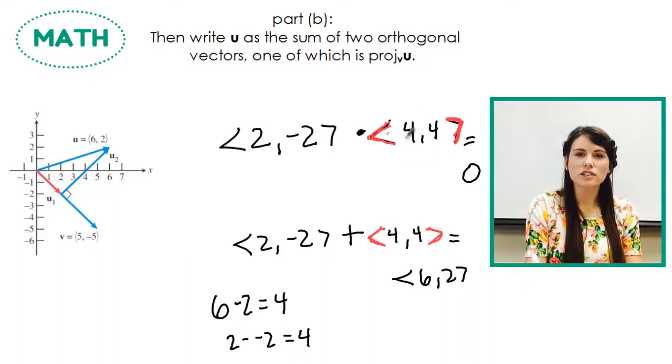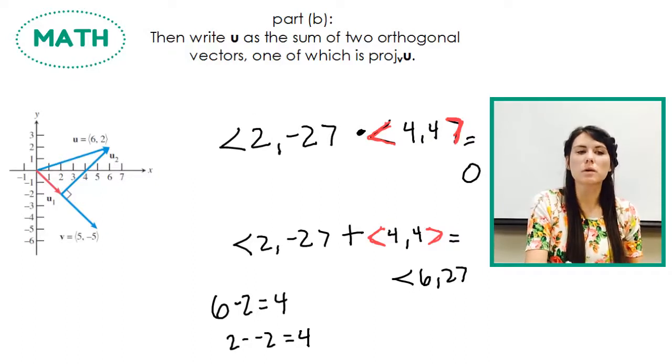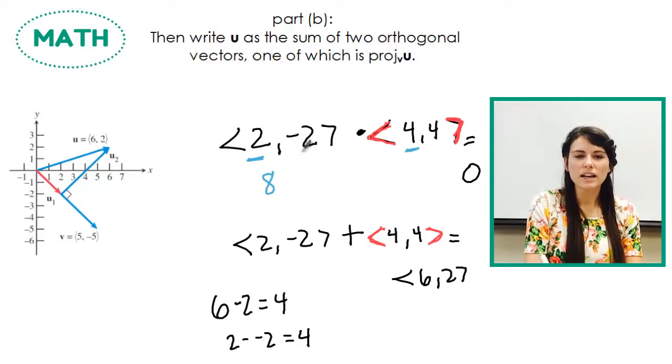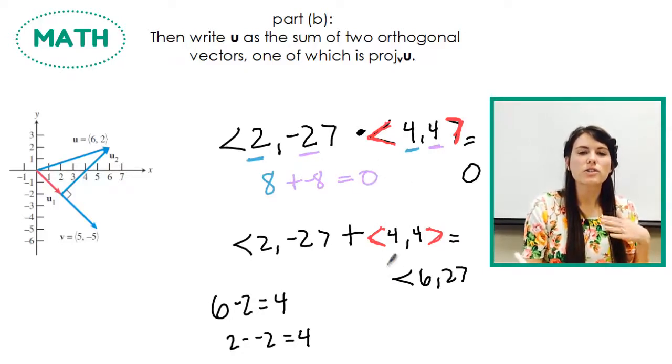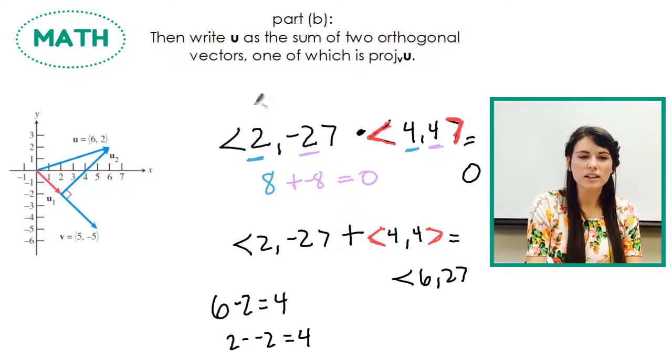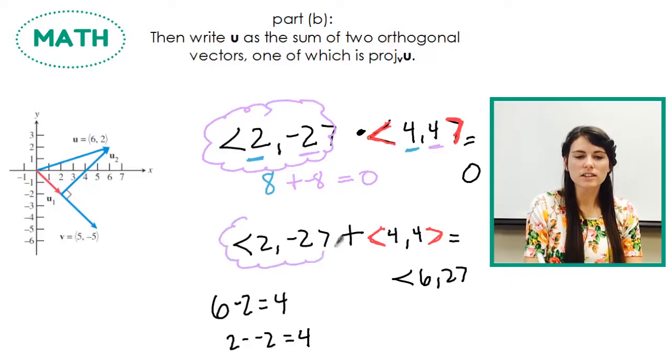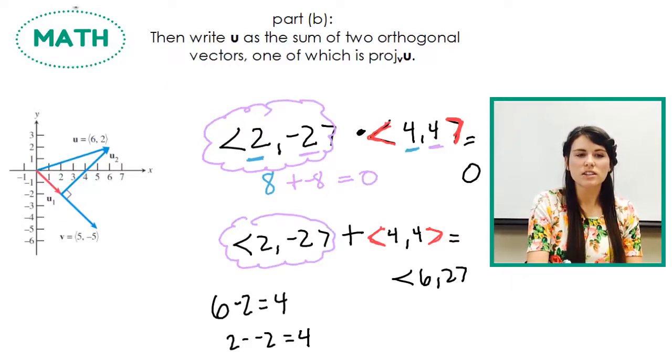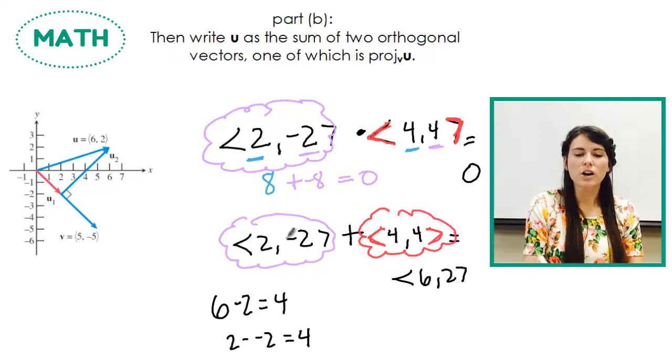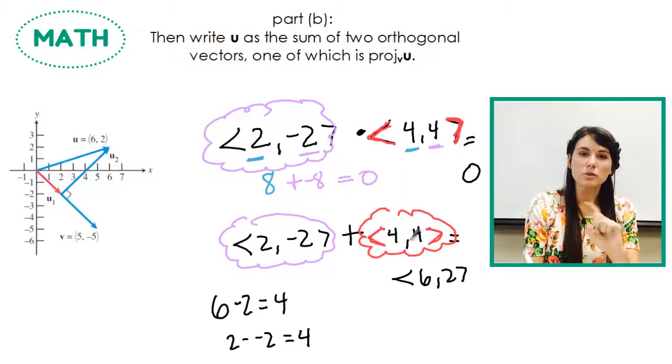And so I'm going to check to make sure that this is orthogonal. So I'm going to check to make sure that their dot product is 0. So I take 2 times 4, which is 8. Then I'm going to take negative 2 times 4, which is negative 8. And when I add those together, I get 0. So not only have I found the projection vector right here, is my projection vector. I have found that my projection vector and this vector here, 4, 4, are orthogonal. So these two vectors together are orthogonal, so they're perpendicular.